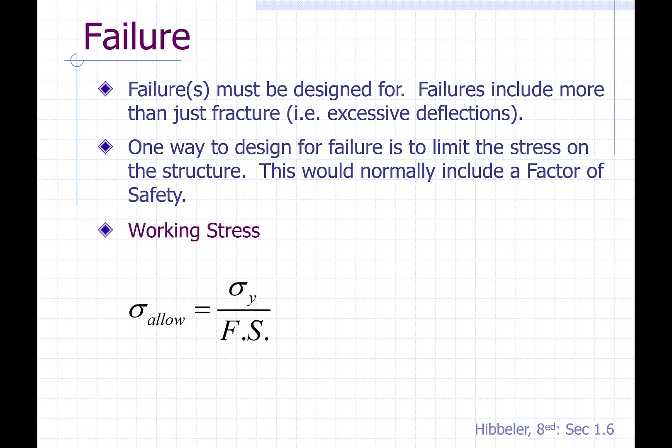For our working stress — our day-to-day stress — we are going to say that our allowable stress is our yield stress divided by a specific factor of safety assigned to that. Our ultimate stress, or the ultimate failure number, would take the ultimate stress and divide it by potentially a different factor of safety. This is a more extreme outcome, and so it might be that we want a higher factor of safety to protect against this outcome, and that would define a different allowable stress.